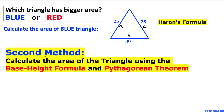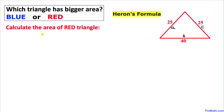In a few minutes I will share with you the second method — how to calculate the area of a triangle using the base-height formula and the Pythagorean theorem. But now let's go ahead and calculate the area of the red triangle.